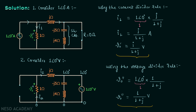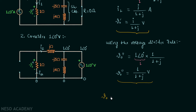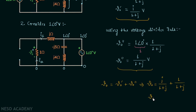By the superposition theorem, V0 = V0' + V0''. This gives V0 = j/(1+j) + 1/(1+j). Since the denominators are the same, V0 = (1+j)/(1+j) = 1 volt. So the final answer is V0 = 1 volt.